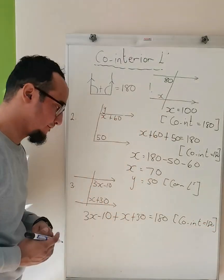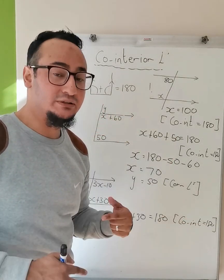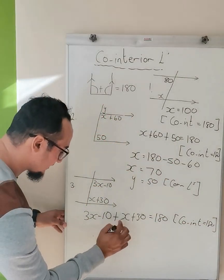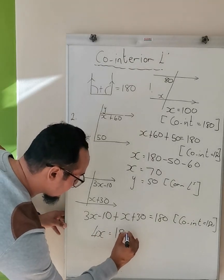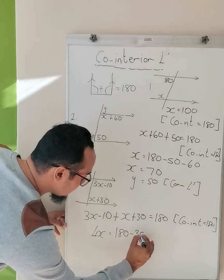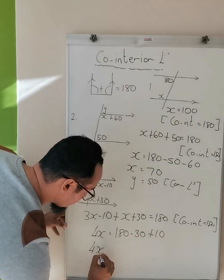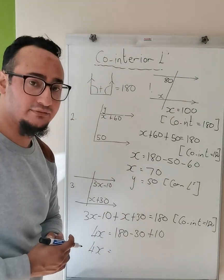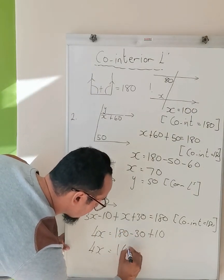...must be equal to 180 degrees. So co-interior angles add up to 180. What do I see? An algebraic equation, which means I need to solve for x. So 3x + x is 4x. 180 minus 30 plus 10. 4x is equal to 180 minus 30, which is equal to 150. 150 plus 10 is equal to 160.